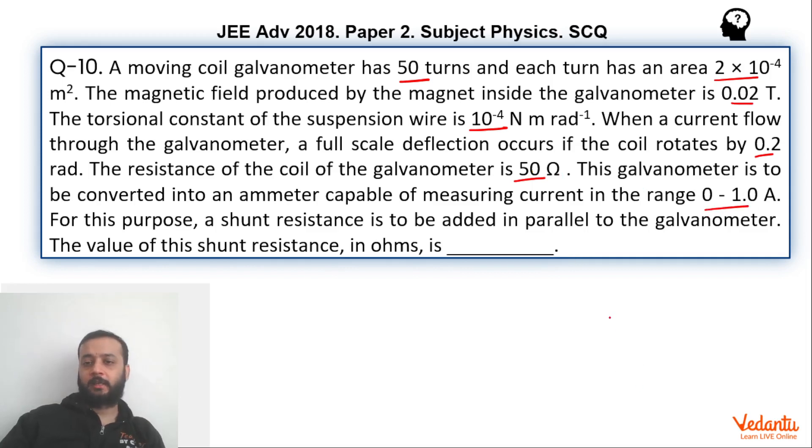I hope the question is clear. So if you try to recall, let's say this is one particular turn of the galvanometer. We will be having 50 such turns. Now this is the torsional wire. When the current will be passed, then because of magnetic torque, this coil will turn and the reverse torque will be given by the torsional wire.